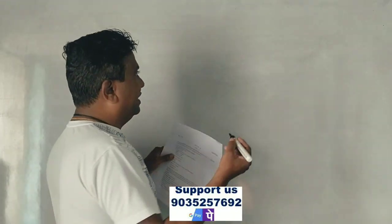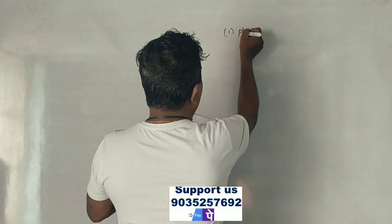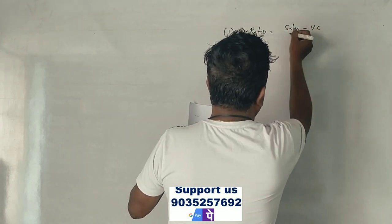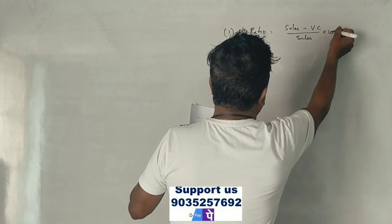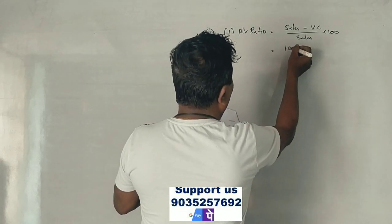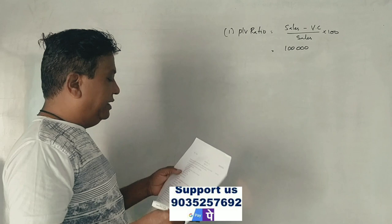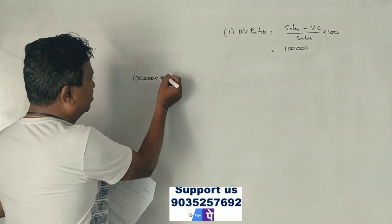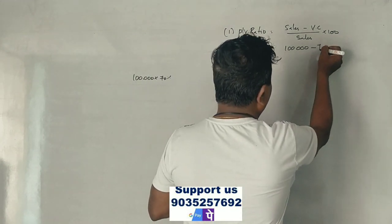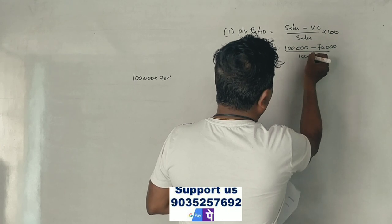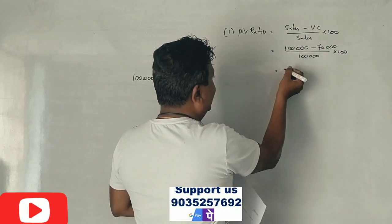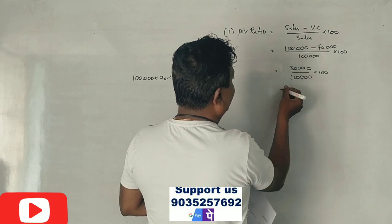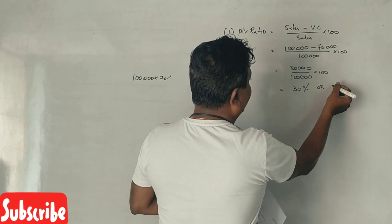First, we calculate the PV ratio. PV ratio is equal to sales minus variable cost, divided by sales, into 100. Sales is ₹1 lakh, variable cost is 70 percent, which is ₹70,000. So: 1,00,000 minus 70,000 equals 30,000, divided by 1,00,000, equals 0.30, that is 30 percent.